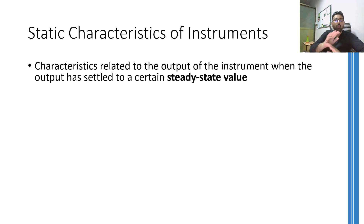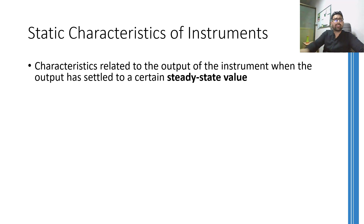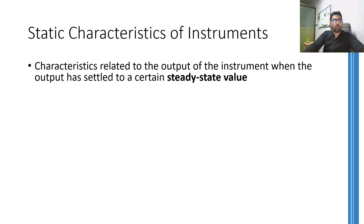Whenever something in this whole world is given some input, it takes some time to reach the corresponding output. For example, if you apply a force on a ball placed on level ground, it will start rolling for some time before reaching a new final location. So the characteristics any instrument or system shows right after the application of the input and before settling to a final output are called dynamic characteristics.